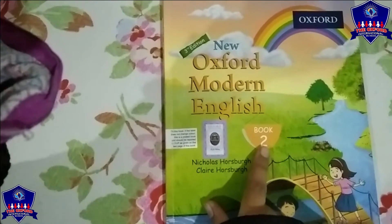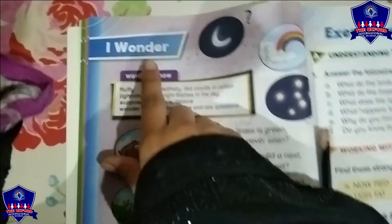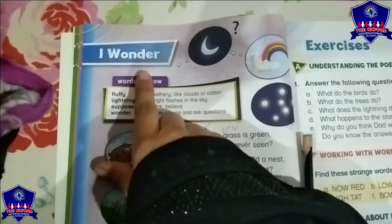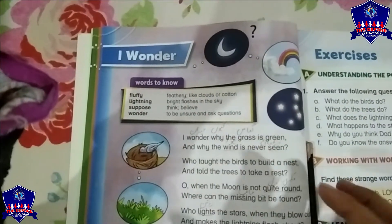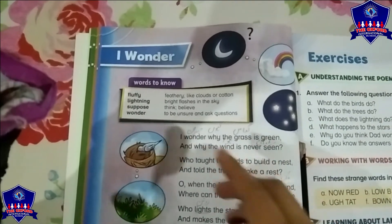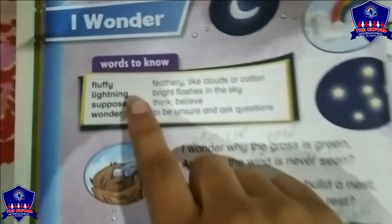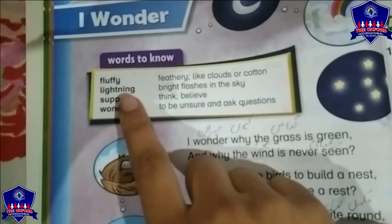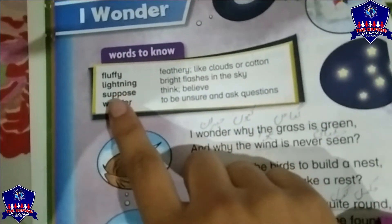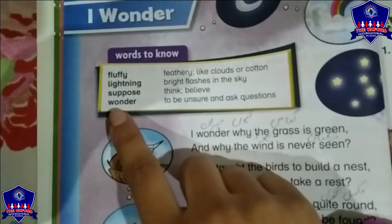Now we are going to study New Oxford Modern English, Book 2. Take out your book and open page number 26. The title is 'I Wonder' — میں حیران ہوں. The writer is amazed about nature in this poem. First let's check the word meanings: fluffy means ملائم (soft), lightning means چمکتی ہوئی (shining/flashing), suppose means سوچنا (to think), wonder means حیران (amazed).